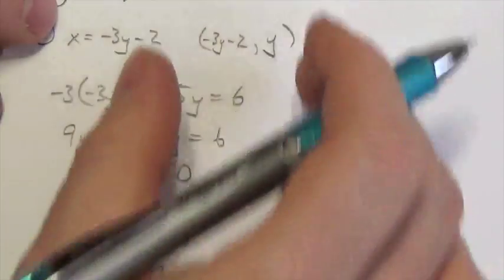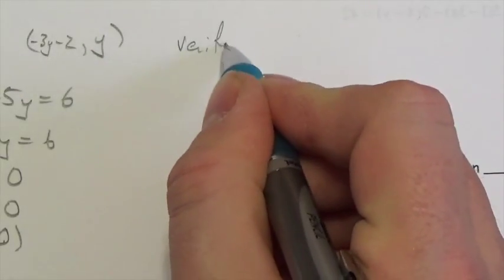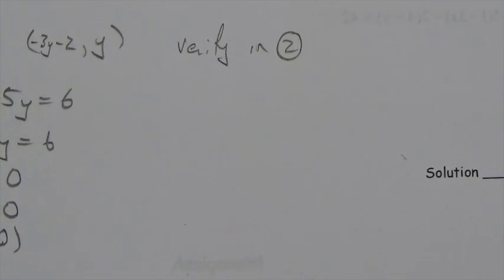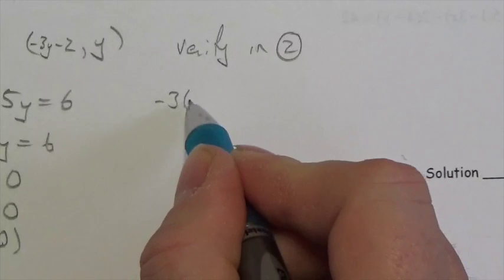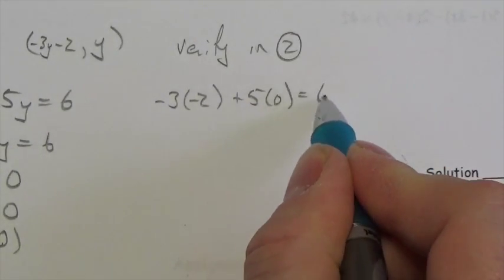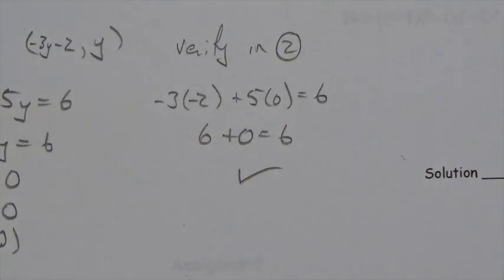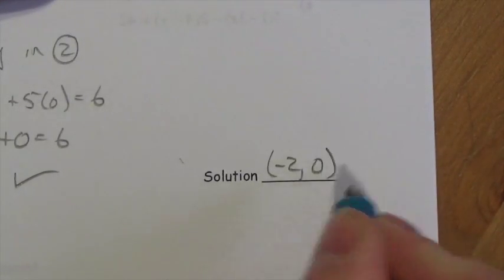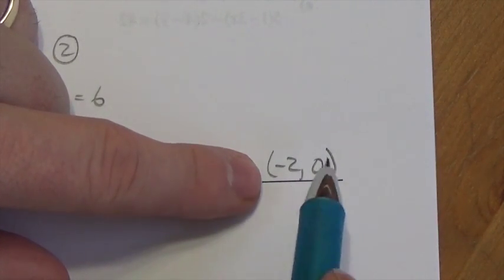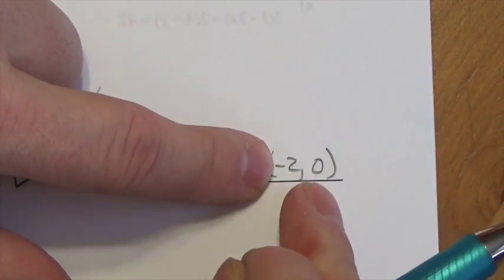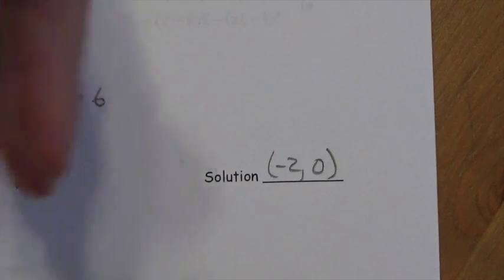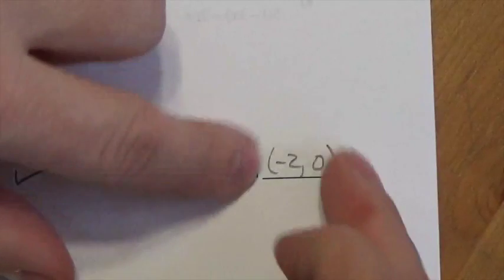I used equation one to get that x-coordinate, so I'm going to verify in equation two. Negative 3 times negative 2 plus 5 times 0 equals 6. Does 6 plus 0 equal 6? Yes, it does. So we've verified that the solution is the point (-2, 0). Also notice how I'm writing my answers — it's x comma y with parentheses around it. If you don't write the parentheses, that's not a point. You need the parentheses to make that work.